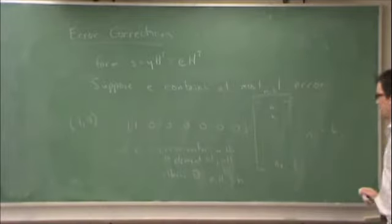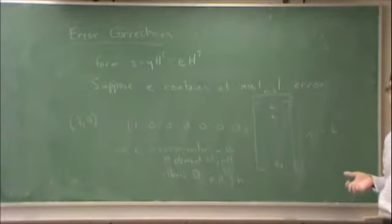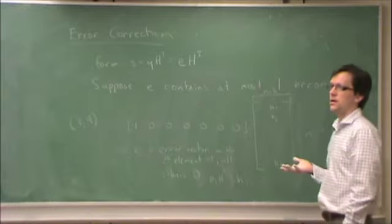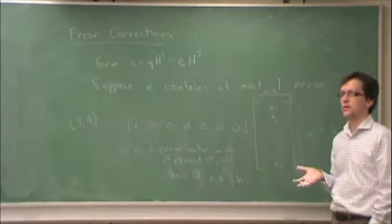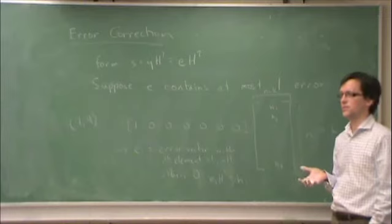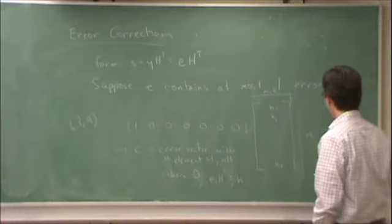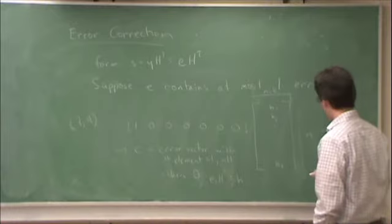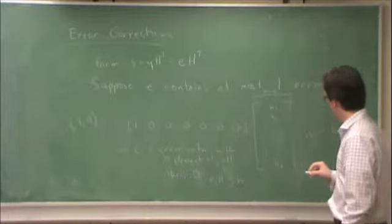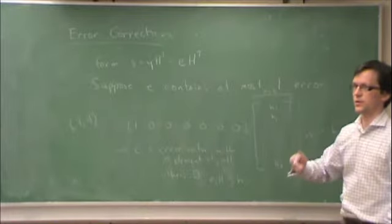So what properties should the h's have in order to distinguish e? For one error, for a single error. They should all be unique, right? So if all of these guys are unique, then the syndrome will pick off where that error occurred.